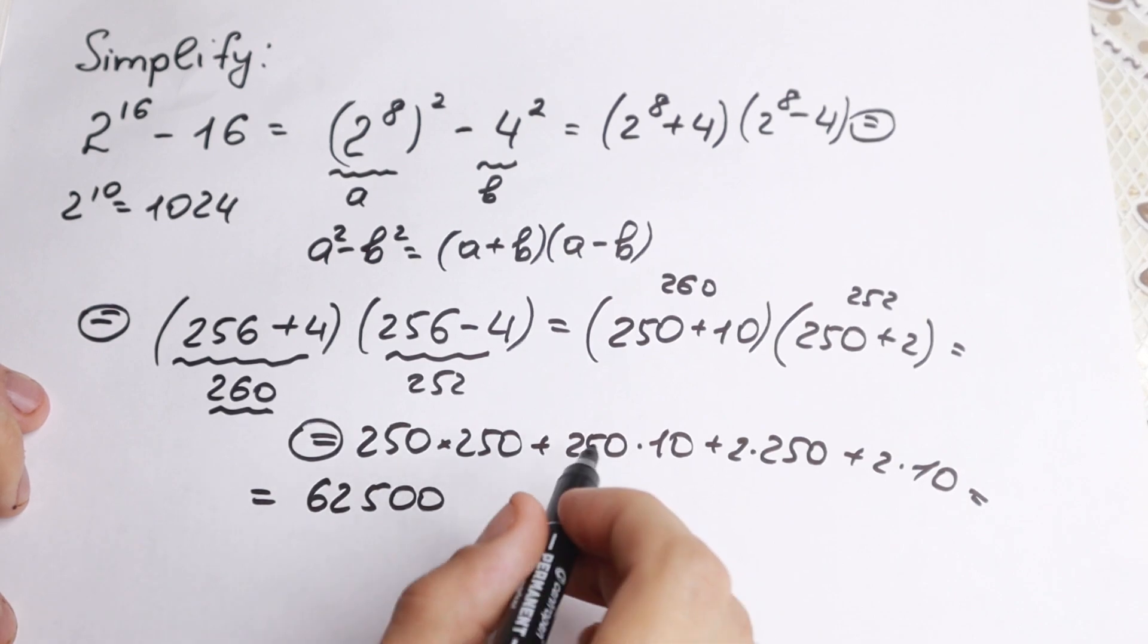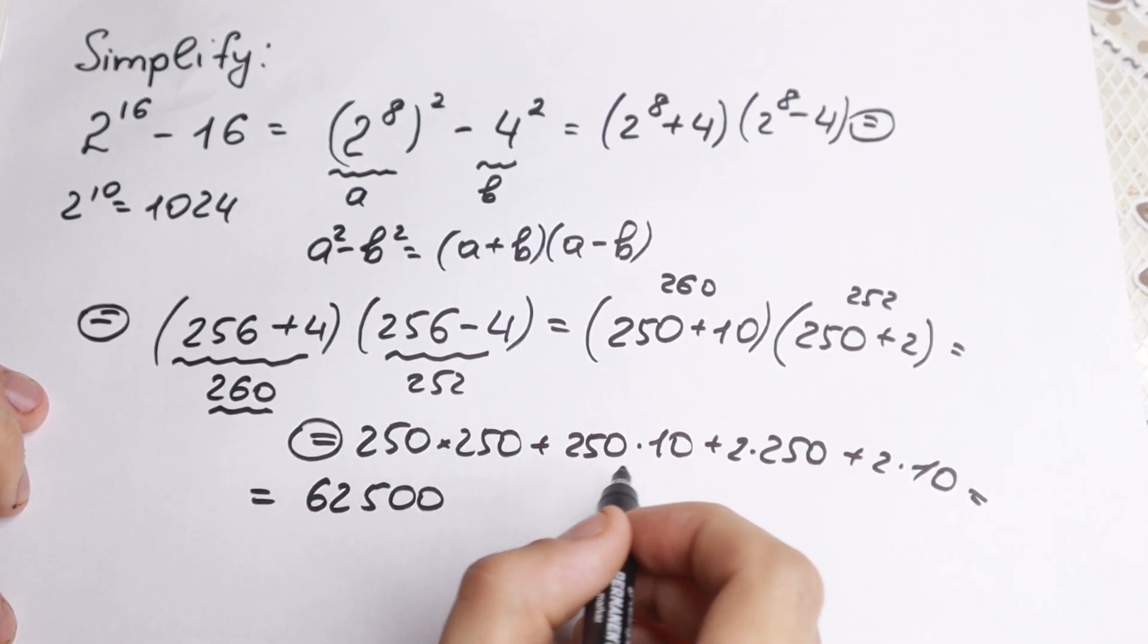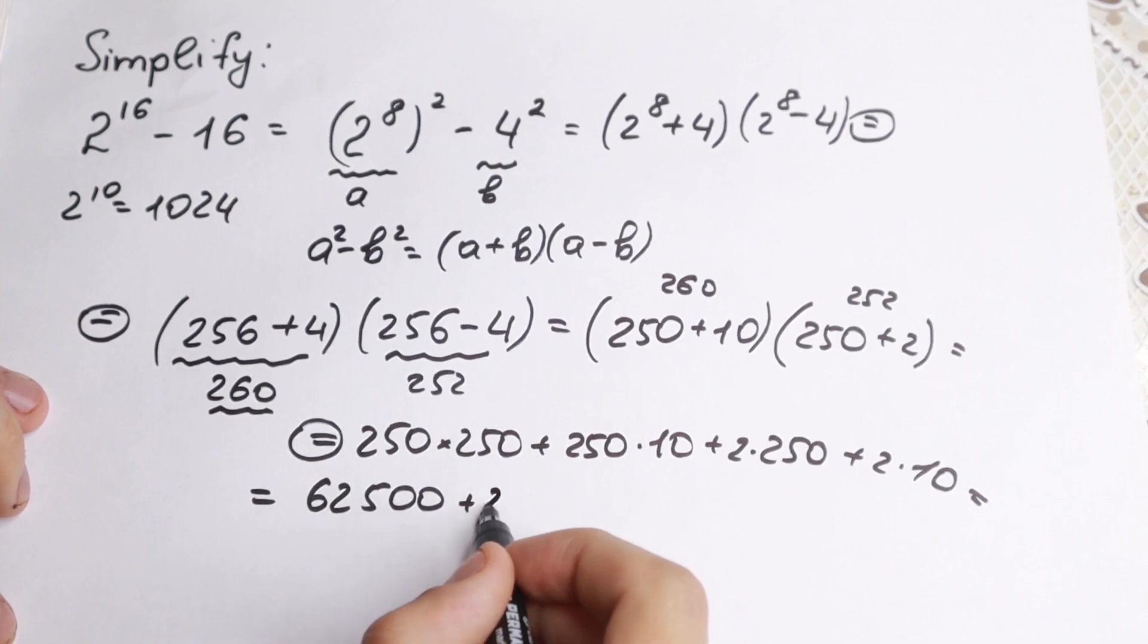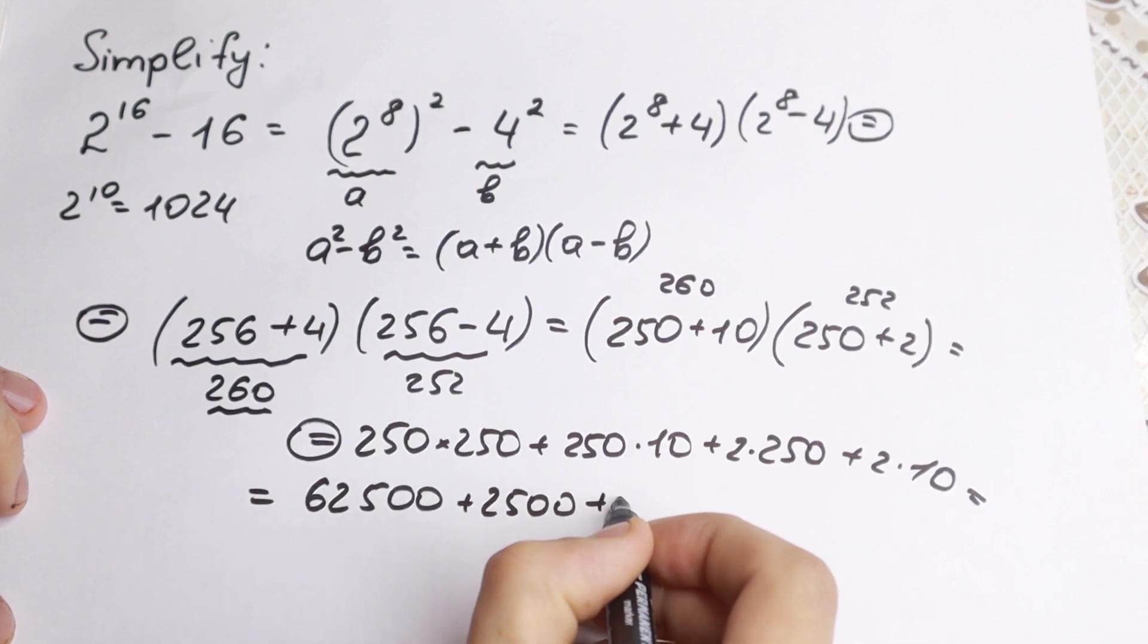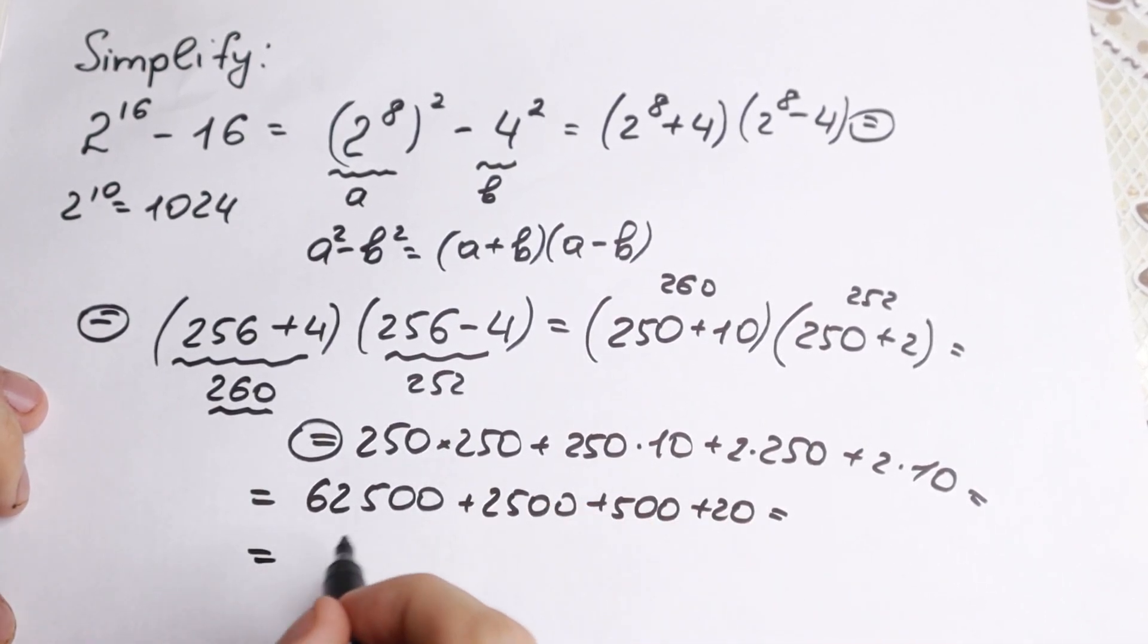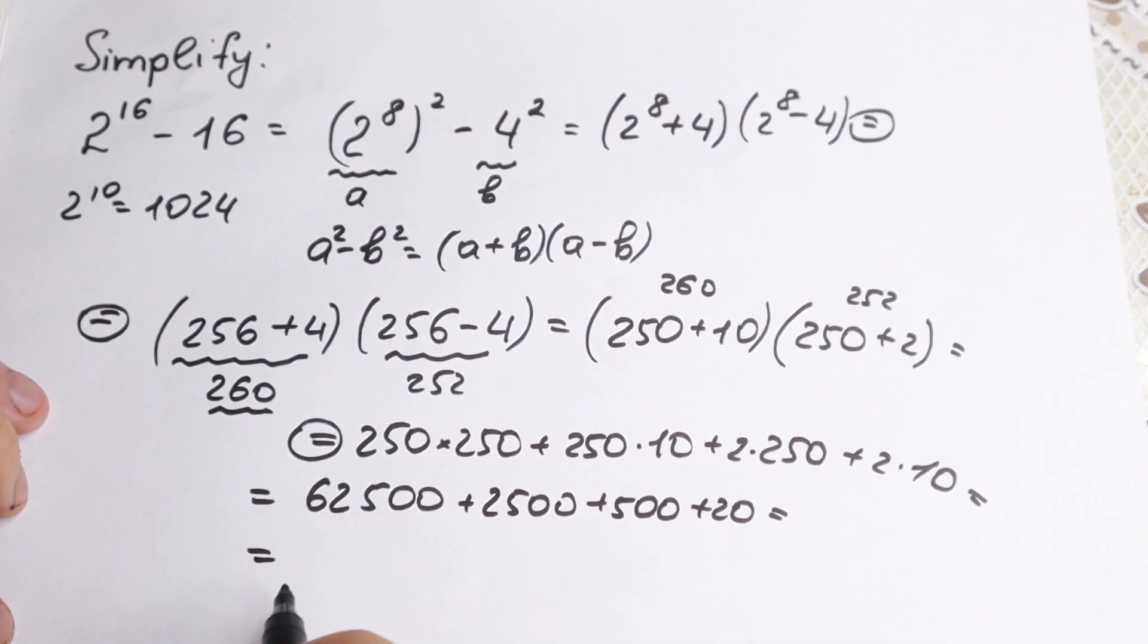250 times 10 equals plus 2500, just adding one zero. And right now plus 500 and plus 20. All simple numbers right here, so we can easily add it.